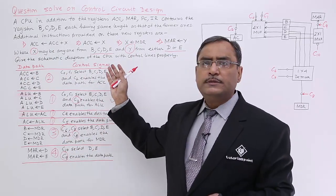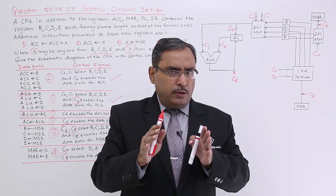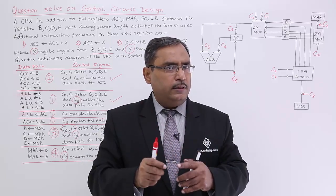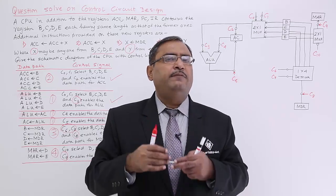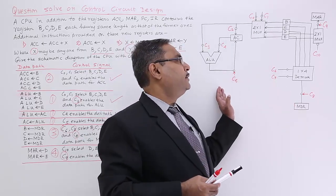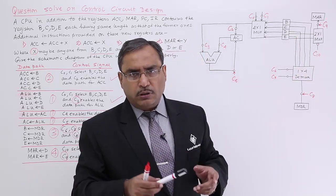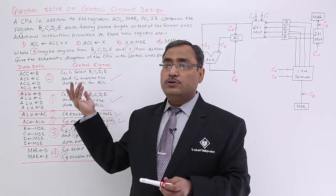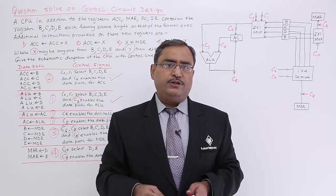This is the way to solve such problems. When the problem comes in words, you have to keep your head cool and find out from where to which location the data is supposed to move. You require control signals to enable the respective data paths and also to select the respective devices or registers. You should draw the circuit keeping ALU here and putting BCDE here, so that there will be fewer crossover lines. I think you have got the idea how problems related with control circuit design can be implemented. Hope you have enjoyed this session. Thanks for watching.